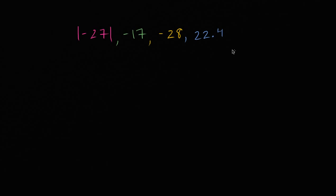So what we have here is four different values, some of them expressed with negative numbers and or absolute value. And what I want to do is I want to sort them from least to greatest, where the least is on the left and the greatest is on the right. So sort from least to greatest.